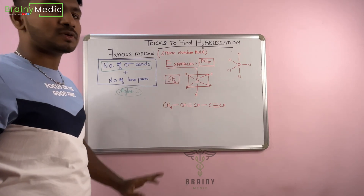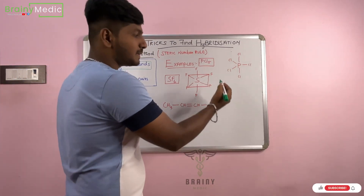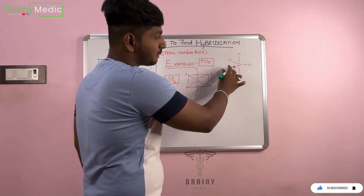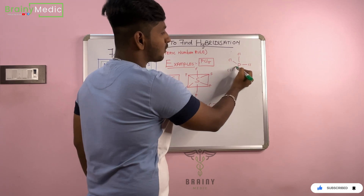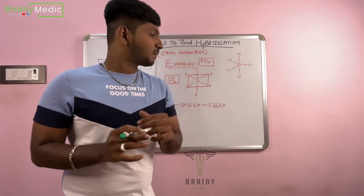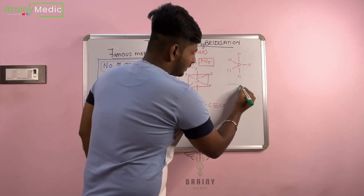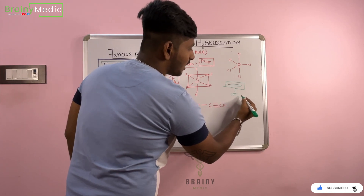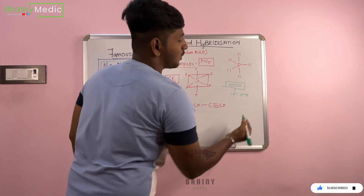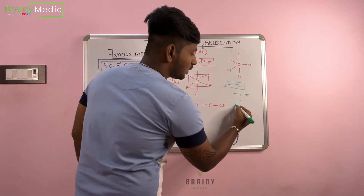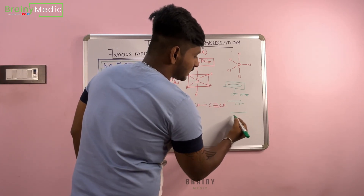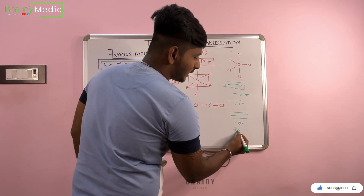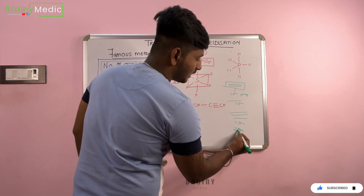This is an example. For example, here is PCl5. In PCl5, there is no lone pair. There are 5 sigma bonds total: 1, 2, 3, 4, 5. If you have a double bond, it is 1 sigma and 1 pi. If you have a single bond, it is 1 sigma. If you have a triple bond, there are 1 sigma and 2 pi.